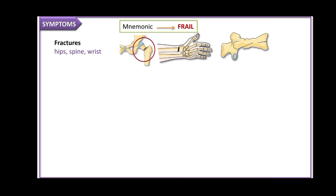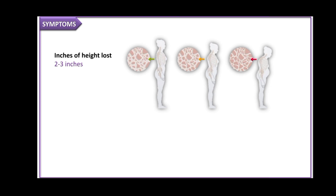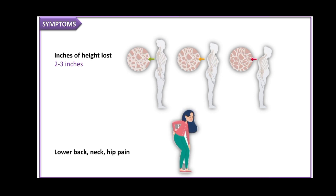The symptoms of osteoporosis can be remembered by the mnemonic FRAIL, as the bones become frail or weak. F stands for fractures, mostly of hips, spine, and wrist. R stands for rounding of the upper back, called Dowager's hump — a severe deformity caused by spinal fractures. Sometimes the person may be asymptomatic. A stands for an inch of height lost (approximately two to three inches) due to vertebral fractures. I and L stand for low back, neck, and hip pain, which may occur on palpation or during activity.